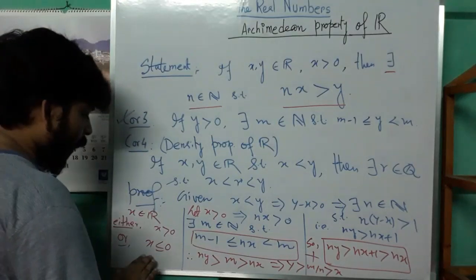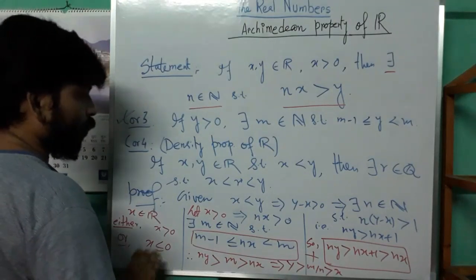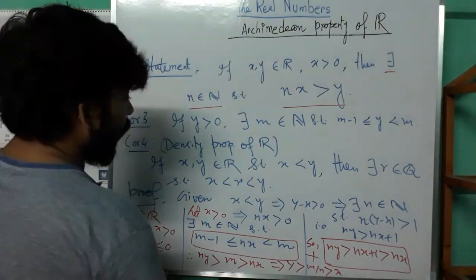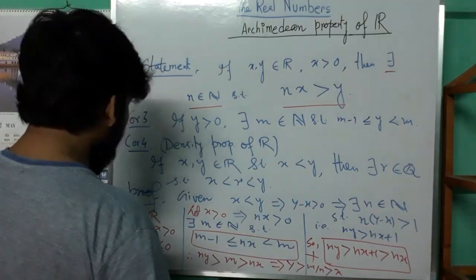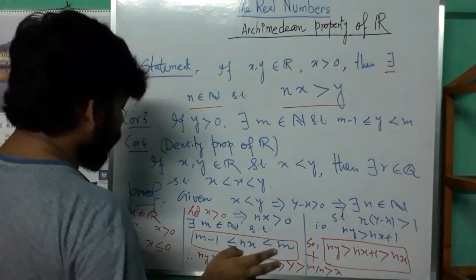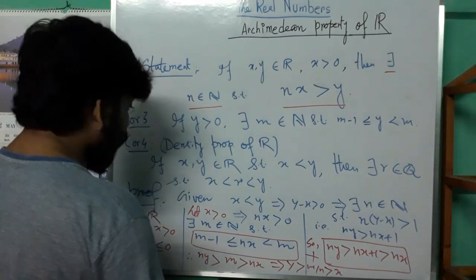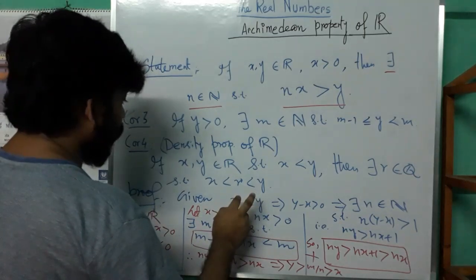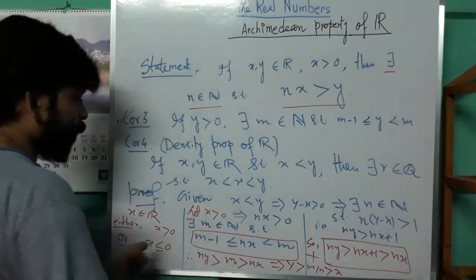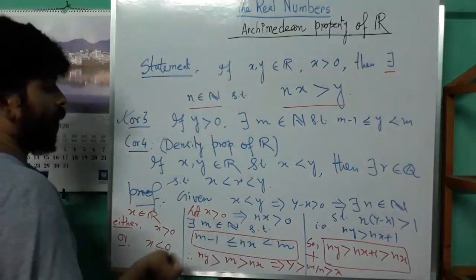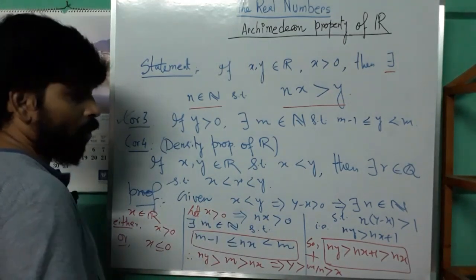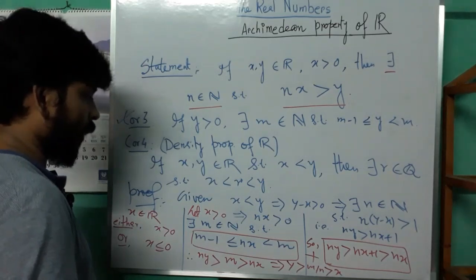Now we consider the case where x ≤ 0. If x = 0 there is nothing to prove. If x is negative, we consider two sub-cases: x negative and y positive, and x negative and y negative — those involve simple manipulation and we leave them for the audience.